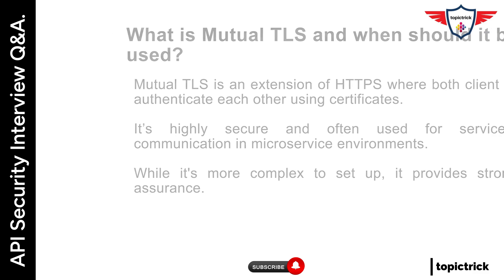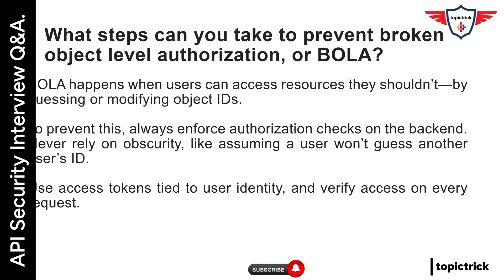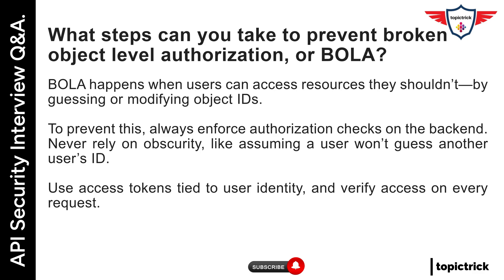What steps can you take to prevent broken object-level authorization, or BOLA? BOLA happens when users can access resources they shouldn't by guessing or modifying object IDs. To prevent this, always enforce authorization checks on the back end. Never rely on obscurity, like assuming a user won't guess another user's ID. Use access tokens tied to user identity and verify access on every request.